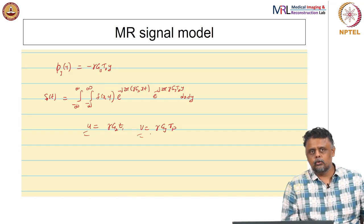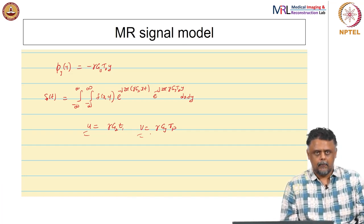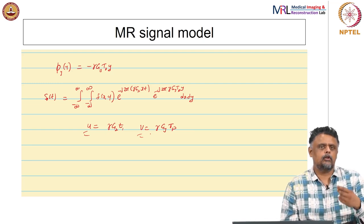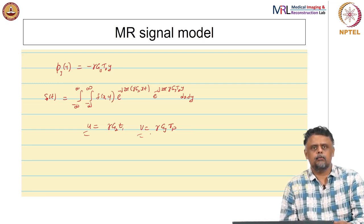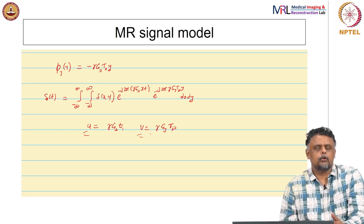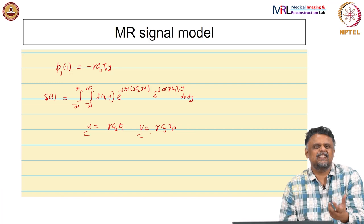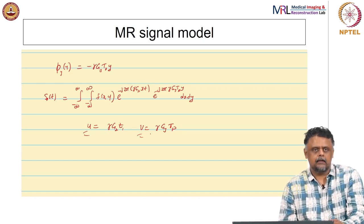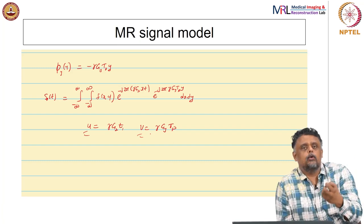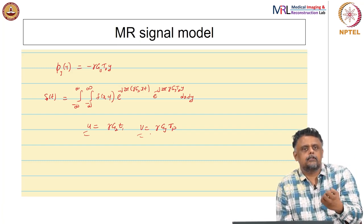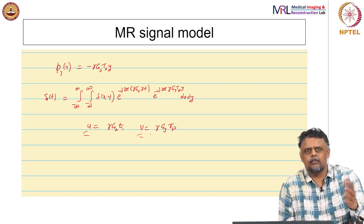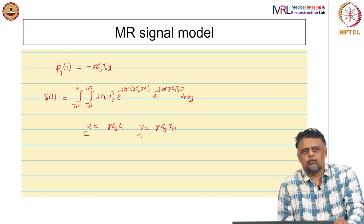In CT you are measuring electronic properties — the attenuation coefficient μ, which is a function of energy and atomic number, and more practically a function of physical density. In MRI you are measuring nuclear properties: magnetization density and relaxation time properties, specifically of water. The sensing mechanisms are also different.